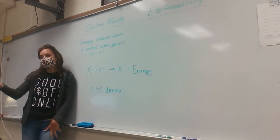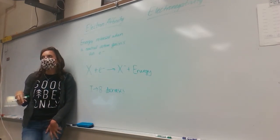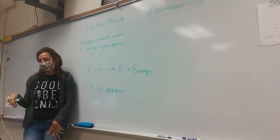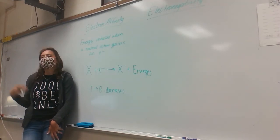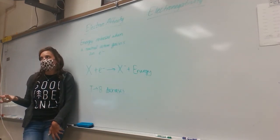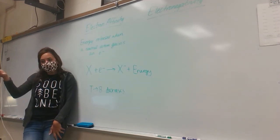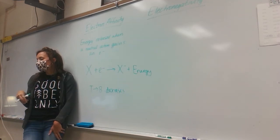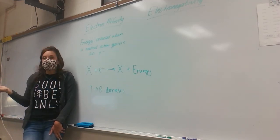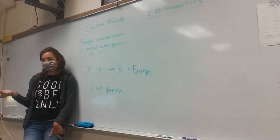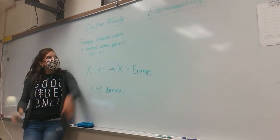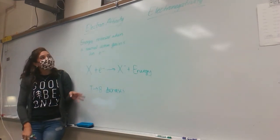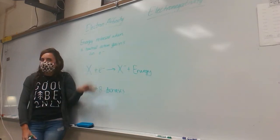So when hydrogen gains an electron, more energy is released than when potassium gains one. When fluorine gains an electron, more energy is released than when bromine gains one. Electron affinity isn't discussed very often — you just need to know what it is.